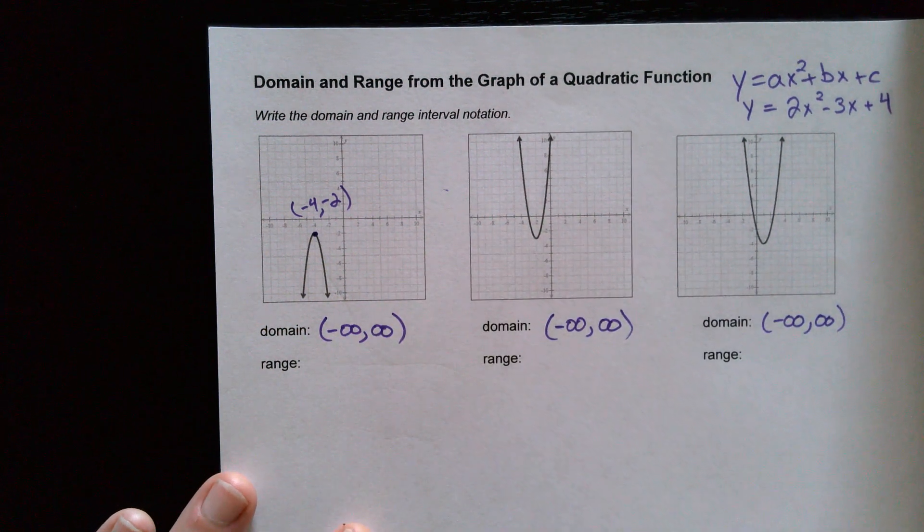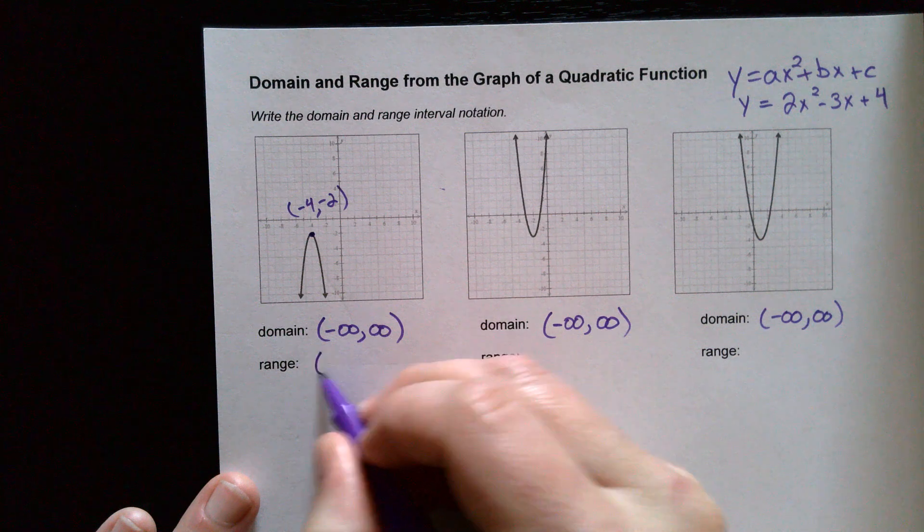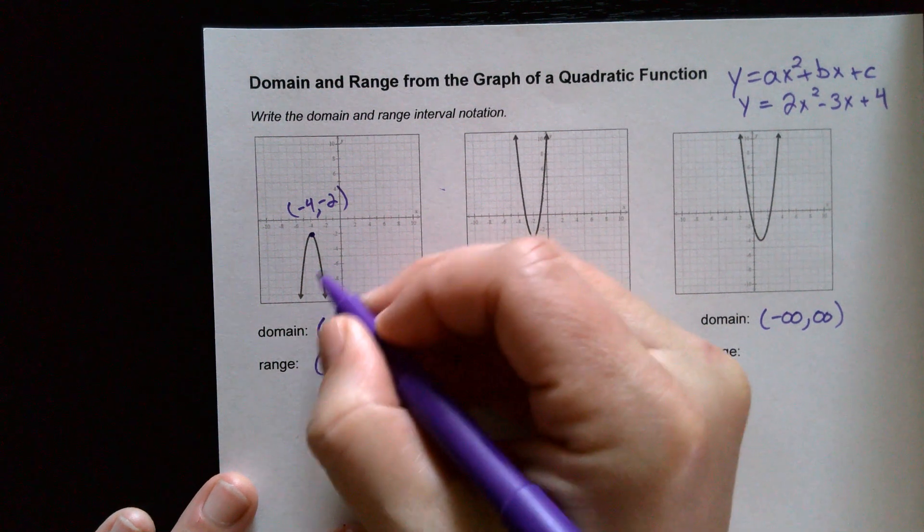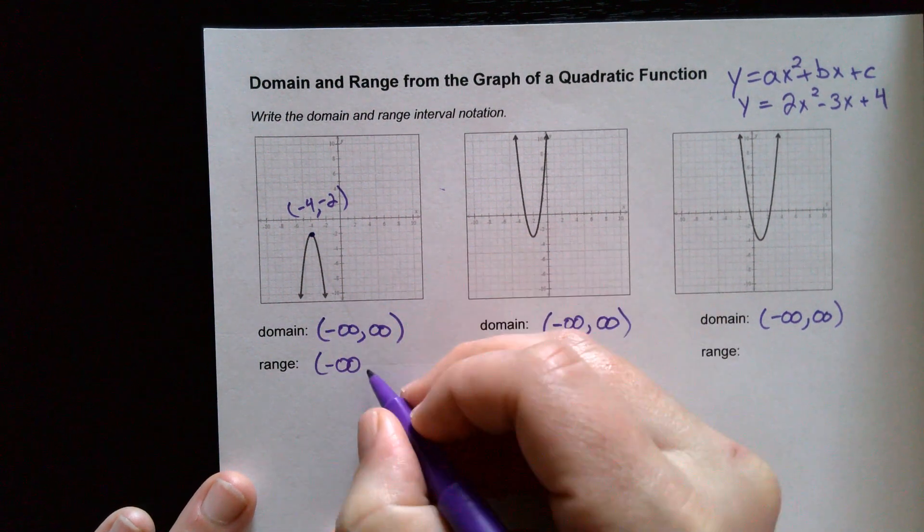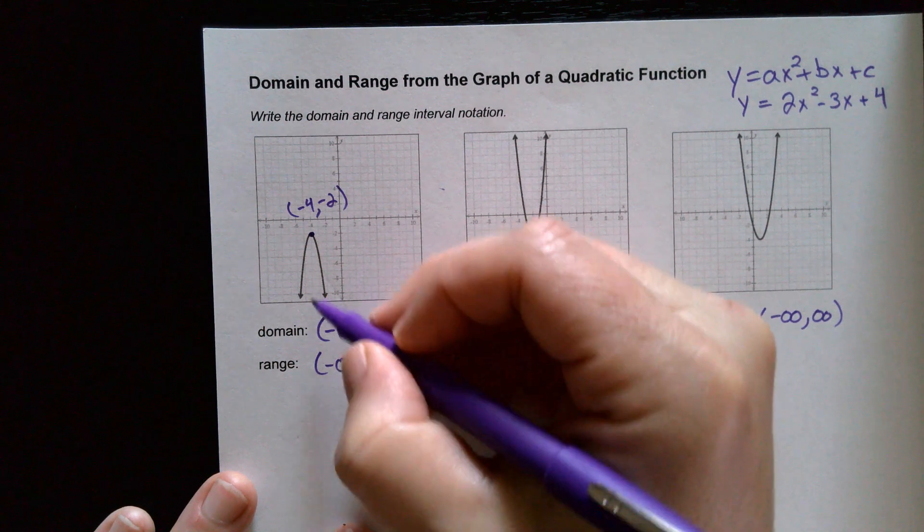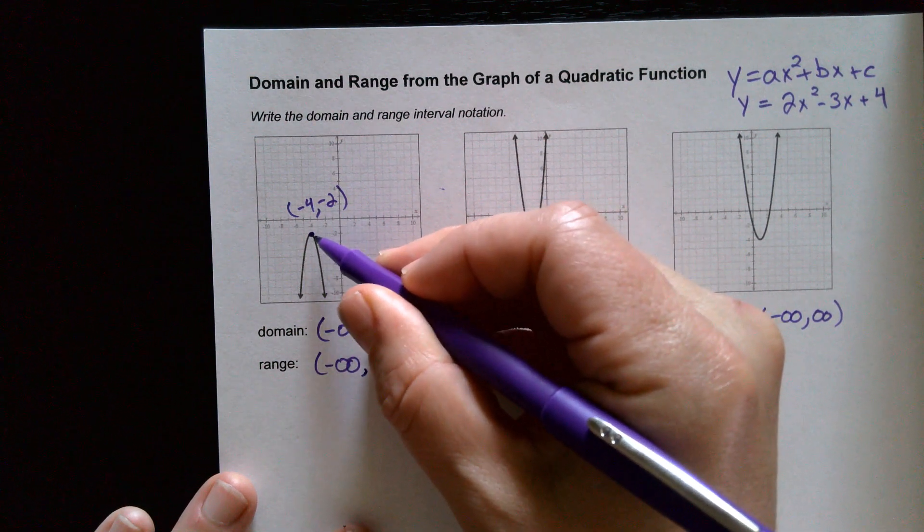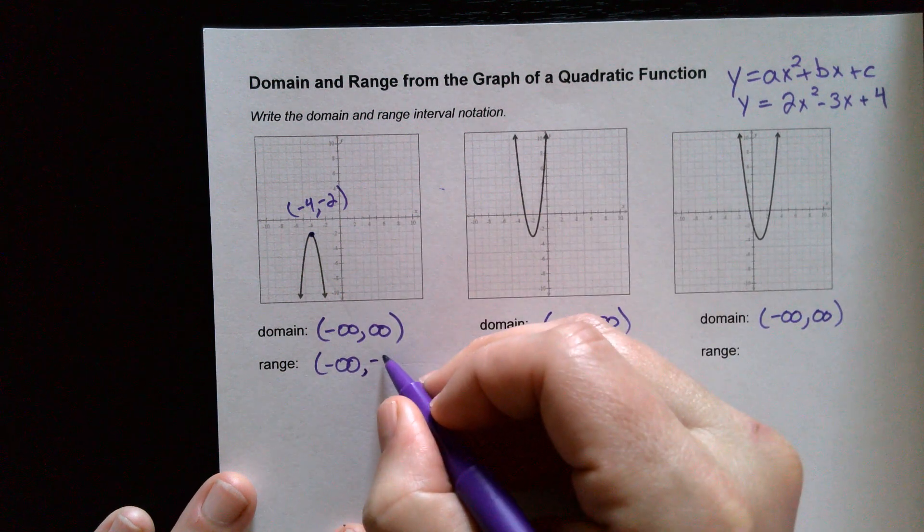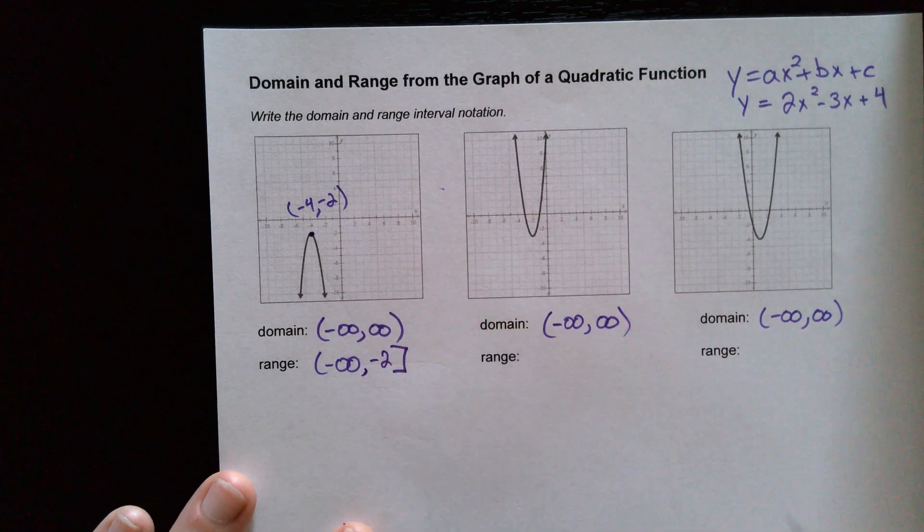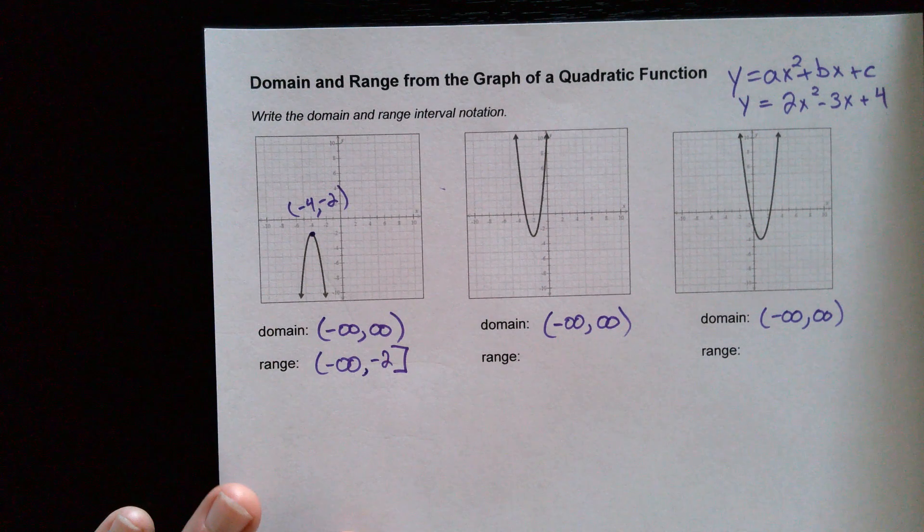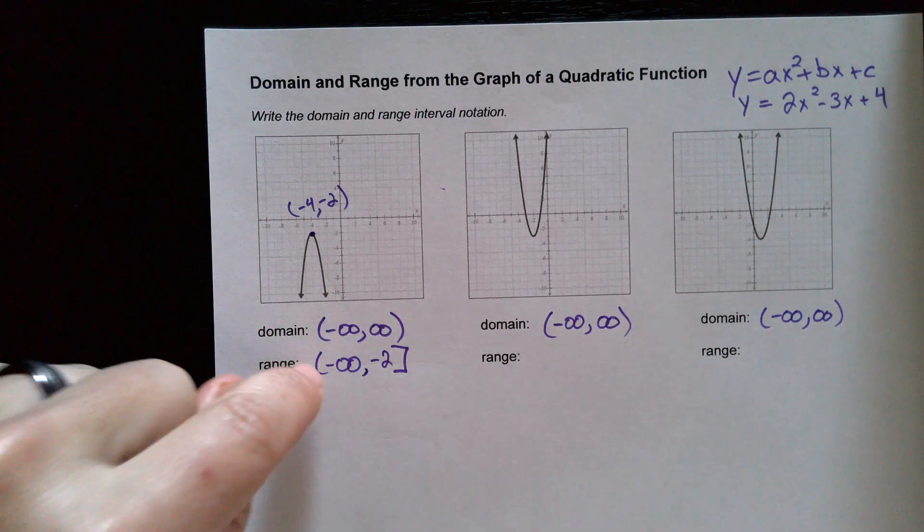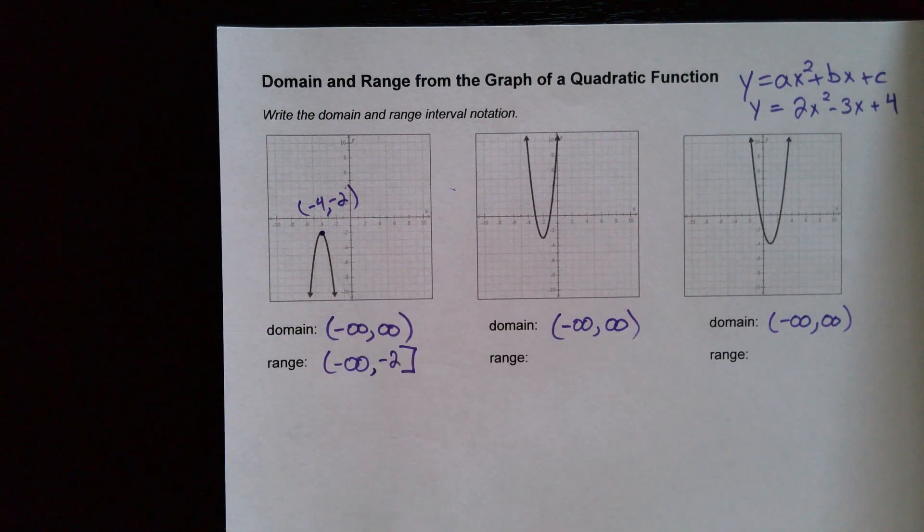And you always have to write your smaller number first. So we'll start with negative infinity, because this thing is going down forever, and it travels up until it hits the highest point of the graph, which we said was negative 2 on the y axis. So negative 2, and I'll give it a bracket, because we are including the point. The reason we put parentheses on these others is because infinity isn't an actual number, so you can't actually get to infinity. It's an idea.